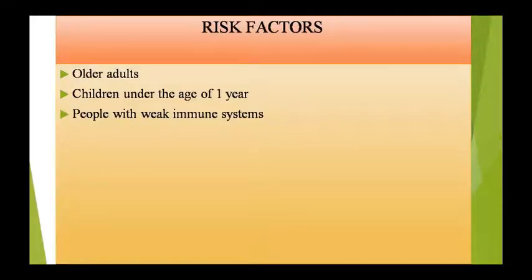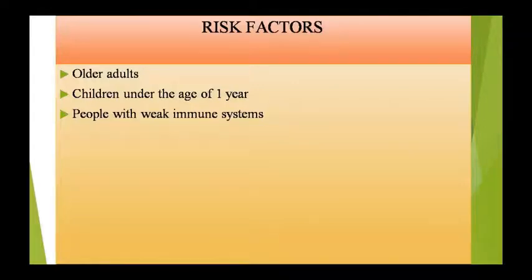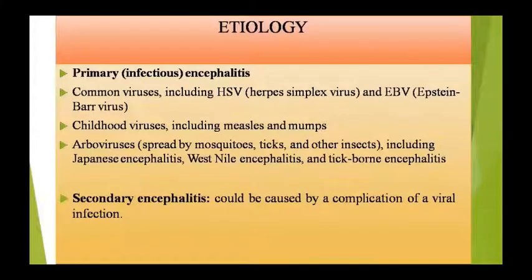Risk factors में — किस-किस को encephalitis हो सकता है? Older adults को, बुजुर्गों को ज़्यादा होता है। एक साल से छोटे बच्चों में भी commonly देखा जाता है, और जिनका weak immune system होता है, यानि immunocompromised patients में यह problem ज़्यादा देखी जाती है।